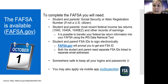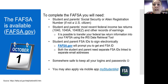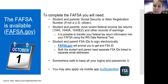An important thing about the FSA ID: there is only one per Social Security number. So if your parent already created one for an older sibling, they need to locate and use the same one again for your application. You may also fill out the FAFSA using a mobile app called My Student Aid.